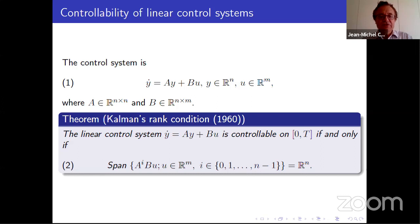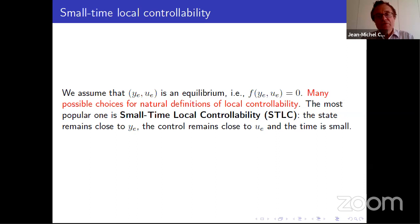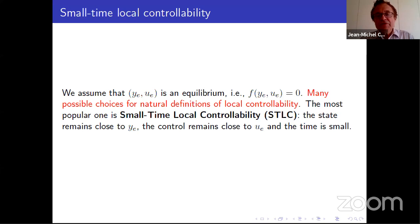Now we move to the case of nonlinear systems. f is now nonlinear and you have some equilibrium, which will usually be (y_e, u_e). There are many notions of controllability. The notion I'm going to use here is small time local controllability: the state will be close to y_e, the control will be close to u_e, and the time will be small.